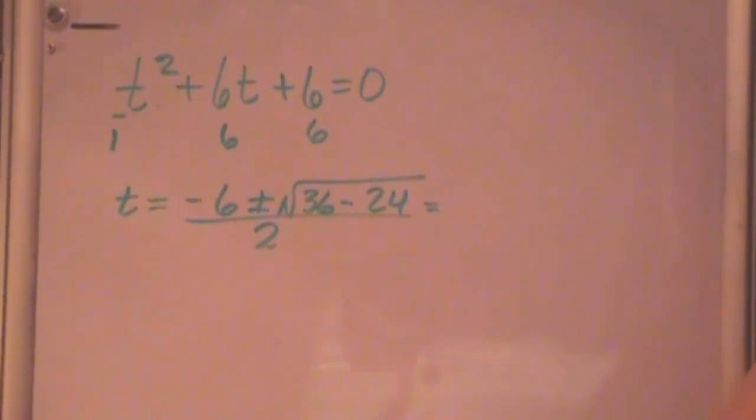Okay, we can simplify this by subtracting the 24 from the 36, and we get 12, right? So we have minus 6 plus or minus—and 12 is 4 times 3, so we have 2 root 3, all over 2, and now our 2 can cancel out into here, and we end up with t equal to minus 3 plus or minus the square root of 3.